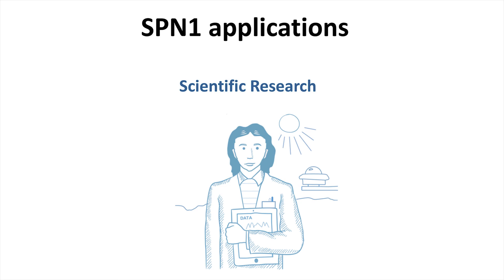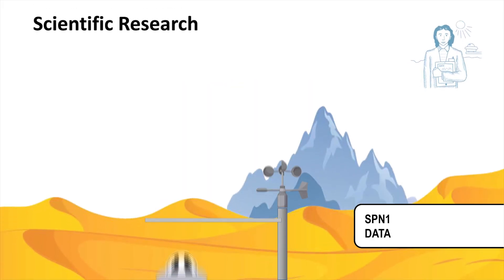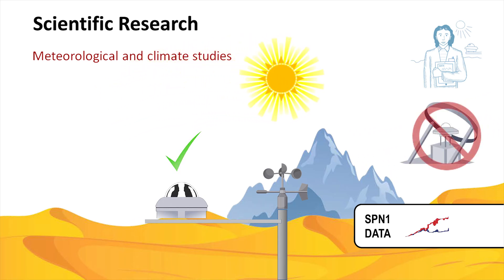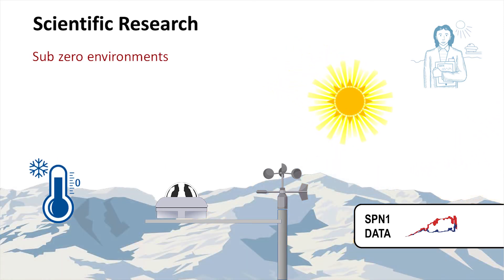Now let's look at meteorology and other scientific applications. The SPN1 enables solar radiation and DNI to be monitored at hostile and remote sites where regular shadow band adjustment would be virtually impossible. The built-in heater keeps the dome clear from condensation and ice down to minus 20 degrees Celsius.